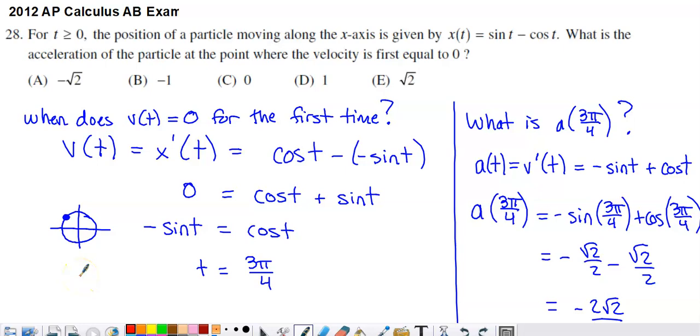So here's the final problem from the 2012 AB multiple choice set from section 1. It's a no calculator question, and it tells us that time is going to be 0 or larger, and then the position of a particle moving along the x-axis is given by this function x of t. What is the acceleration of the particle at the point where the velocity is first equal to 0?